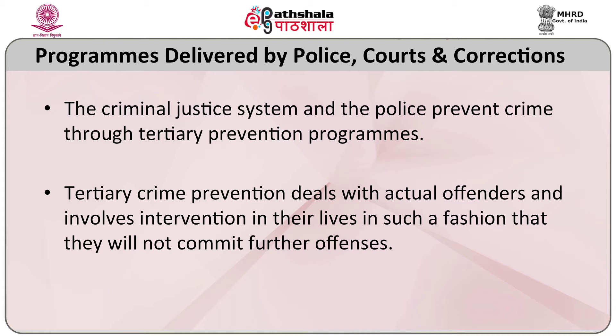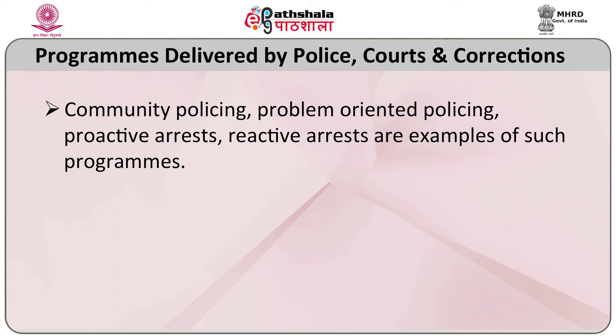Then we come to programs delivered by police, courts and corrections. The criminal justice system and the police prevent crime through tertiary prevention programs. Tertiary crime prevention deals with actual offenders and involves intervention in their lives so that they will not commit further offenses. Community policing, problem-oriented policing, proactive arrest and reactive arrest are examples of such programs. The experience of a community-oriented policing model in Chicago, United States, demonstrates how one city implemented a model that appears effective both in terms of better community relations and reduced crime problems.